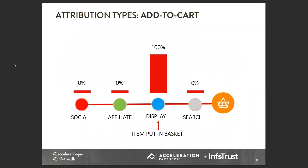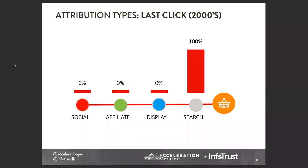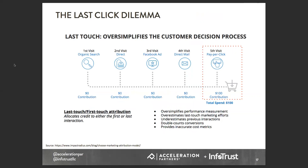And then you have add to cart — the item was put in a basket and you give credit to the channel that initiated that add to basket. Finally, last click. This is the most popular attribution model. Depending on your cookie window, you give 100% of the attribution to the channel that closed the deal, even though a customer went through multiple channels to make that purchase. This is the last click dilemma — it oversimplifies the customer decision process and gives no credit to all the other touch points a customer had to go through.